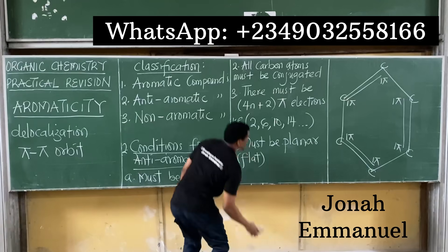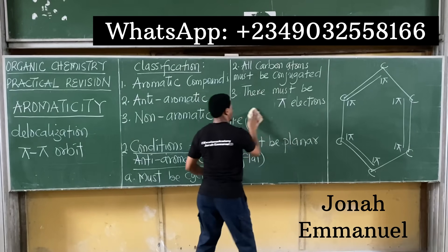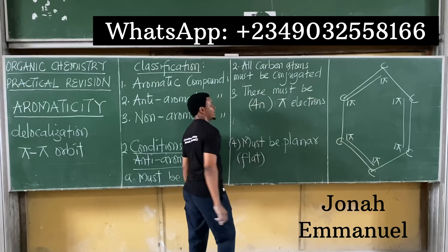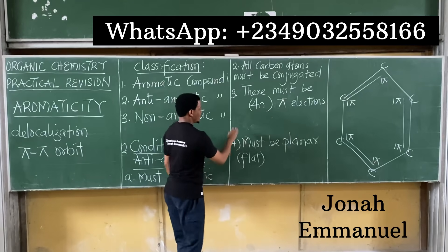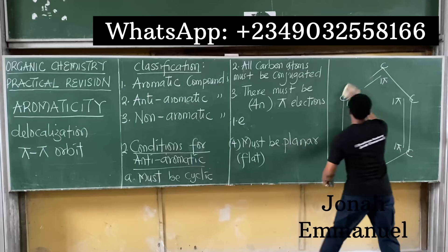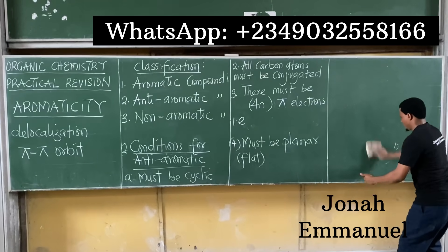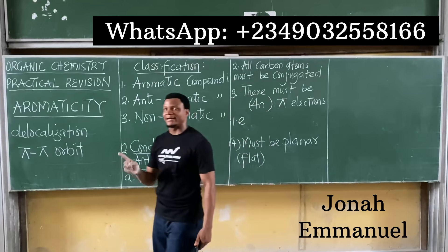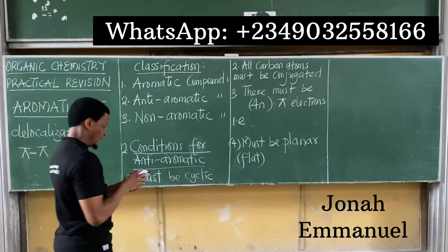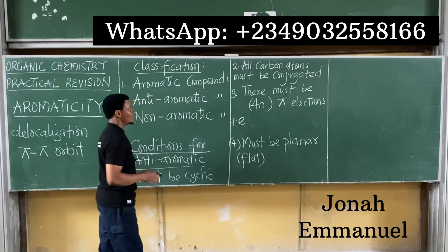Condition three is where the major change happens. For an aromatic compound it's 4n + 2 pi electrons, but for an anti-aromatic compound it's just 4n pi electrons — no plus 2. Condition four: it must also be planar.